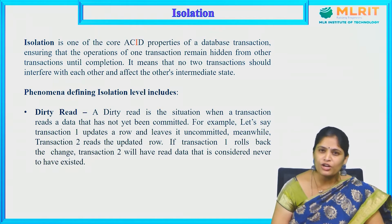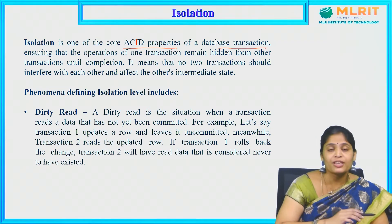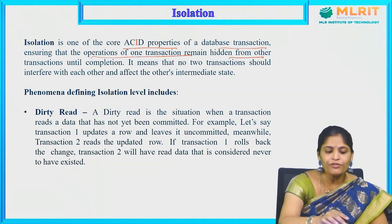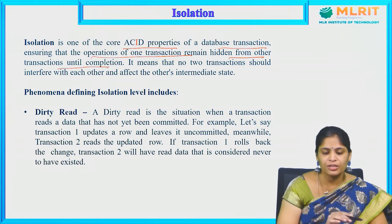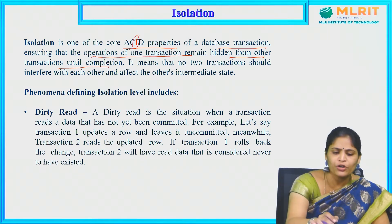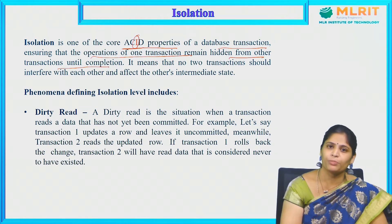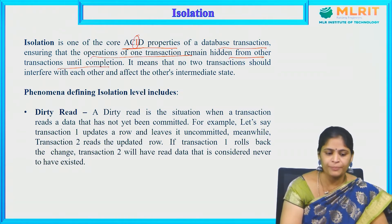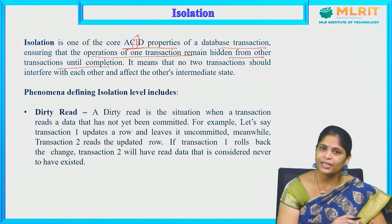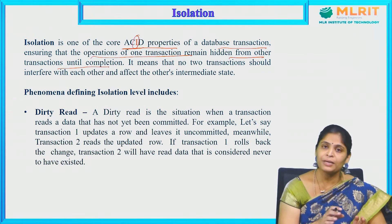Isolation is one of the properties in ACID properties. It is the core ACID property of a database transaction, ensuring that the operations of one transaction remain hidden from other transactions until completion. The acronym ACID stands for Atomicity, Consistency, Isolation, and Durability. The isolation property will not allow other transactions to read or update the data until it has been permitted.